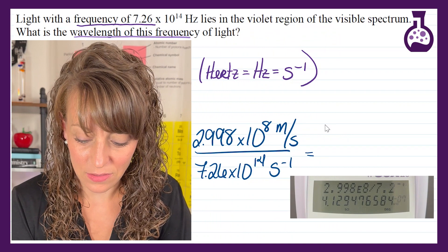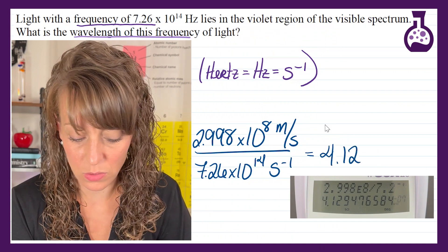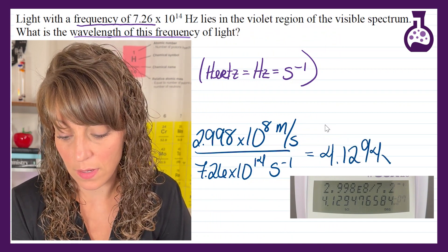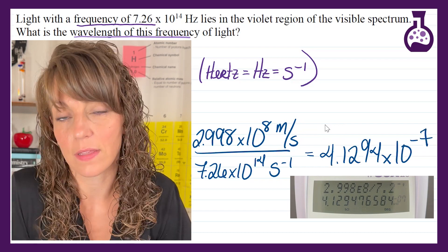And we wind up with an answer of 4.1294 times 10 to the negative 7th.